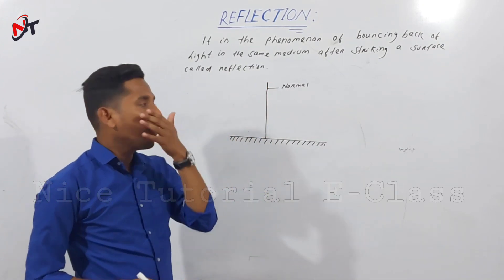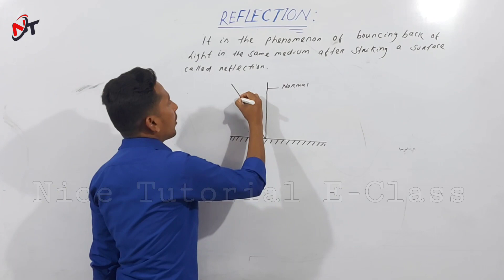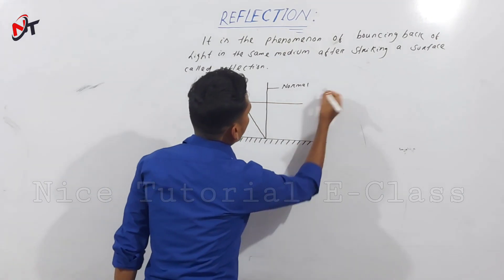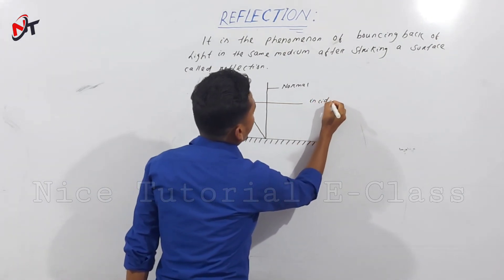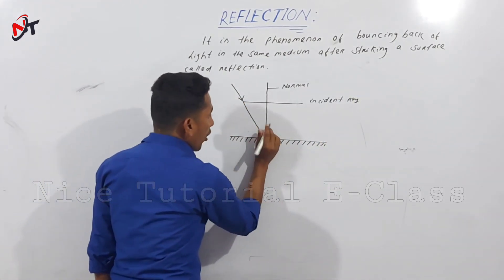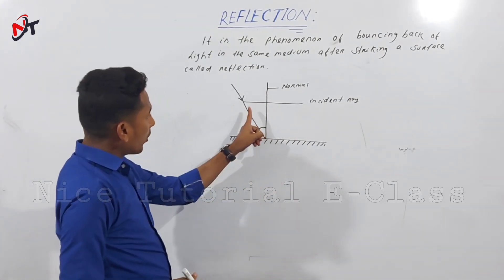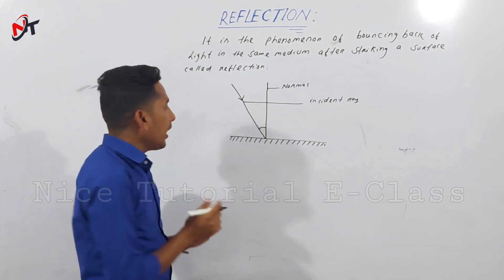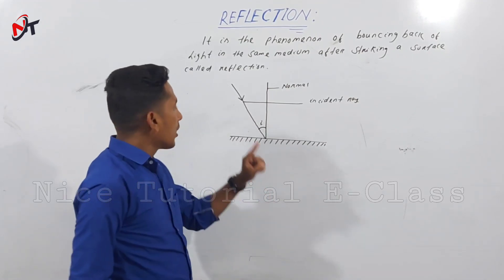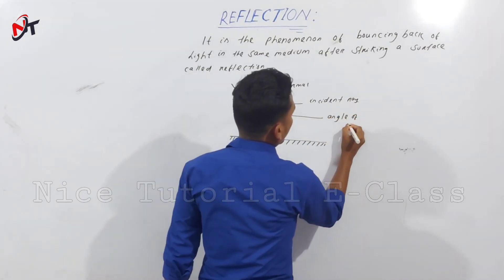If you have a normal, you can see the normal ray. If you have an incident ray on a plane surface, the incident ray creates an angle with the normal, which is called the angle of incidence, and it is denoted as small i. So, the angle of incidence.